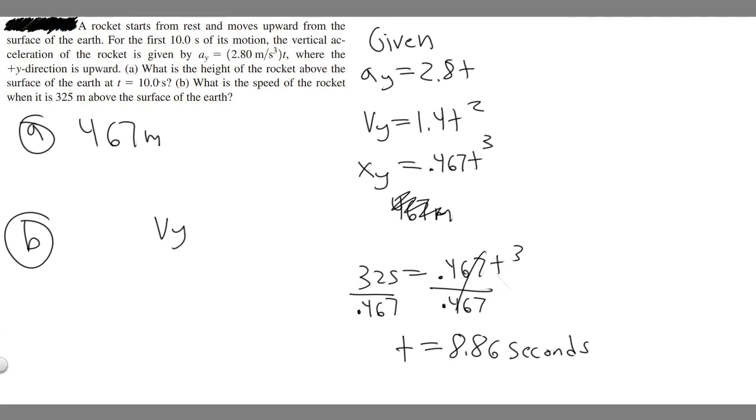So v_y equals 1.4 times t squared. That'll give us the velocity. So if we plug it in, 1.4 times 8.86 squared. If you go ahead and do that, you'll get 109.899 and so on. I'm going to round to 110. So just make it 110.